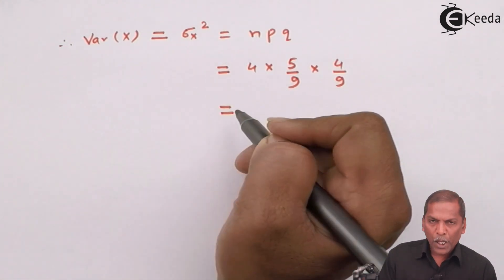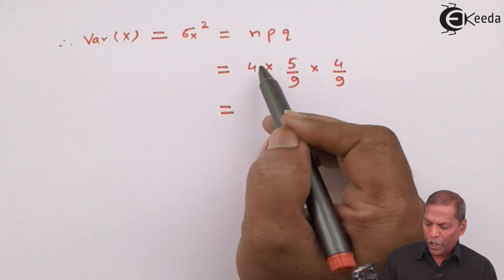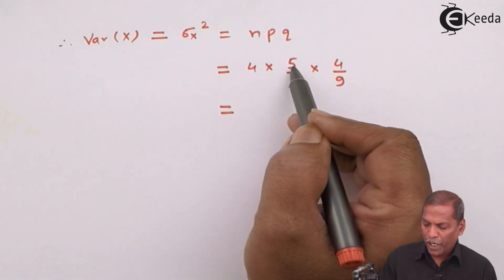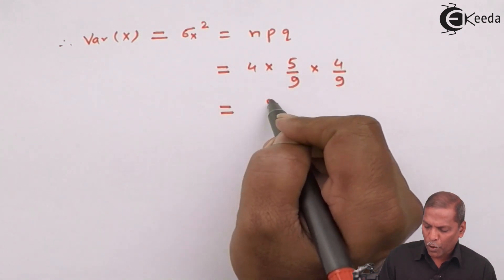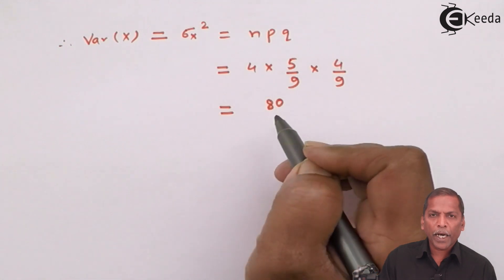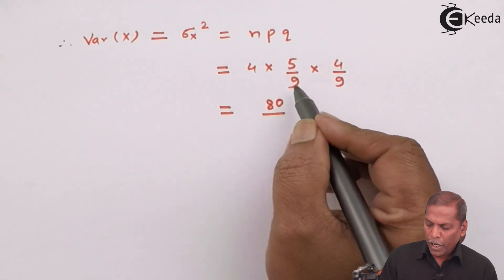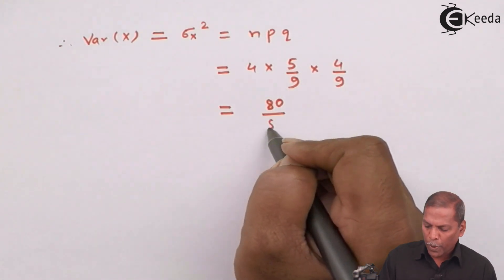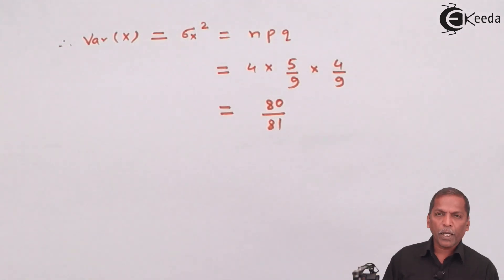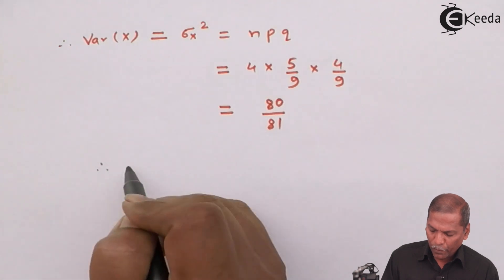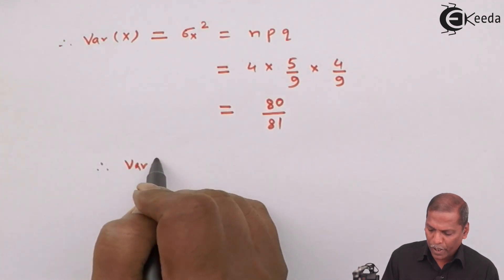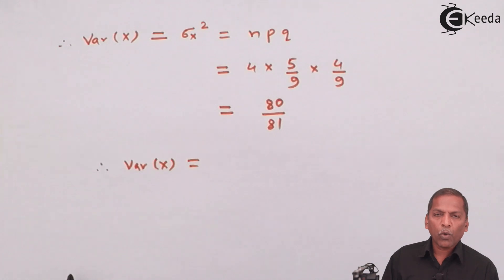So, on multiplying this, we get 4 into 5, 20, 20 into 4, so that gives 80 in the numerator, upon 9 into 9, so that gives 81 in the denominator. So, in this way, we get variance of X is equal to 80 upon 81.